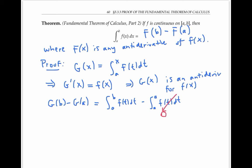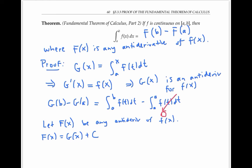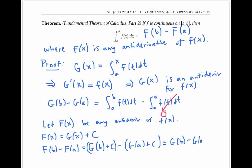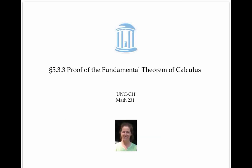But the theorem is supposed to be true for any antiderivative. So let's let capital F be any antiderivative of lowercase f. We know that capital F of x has to equal capital G of x plus some constant, since any two antiderivatives for the same function differ by a constant. Therefore, capital F of b minus capital F of a is going to equal capital G of b plus c minus capital G of a plus c. The constant C cancels out, and we just get capital G of b minus capital G of a, which we already saw was equal to the integral from a to b of lowercase f of t dt. So the left side equals the right side, and the fundamental theorem of calculus part two is proved for any antiderivative. This completes the proof of the fundamental theorem of calculus.